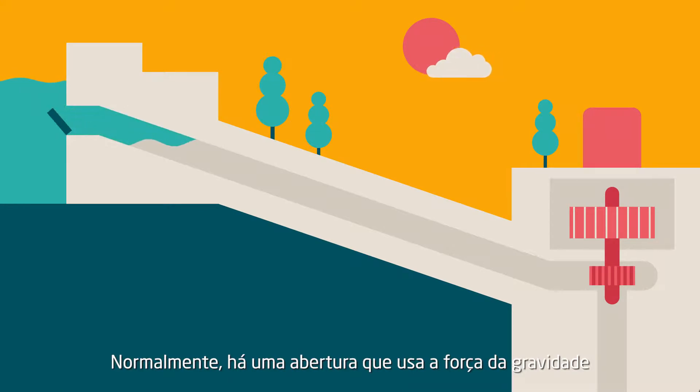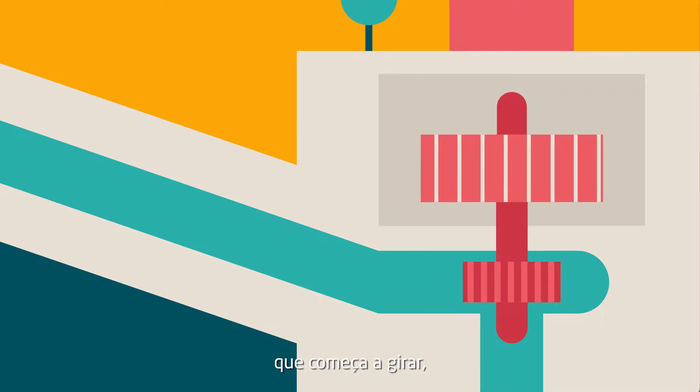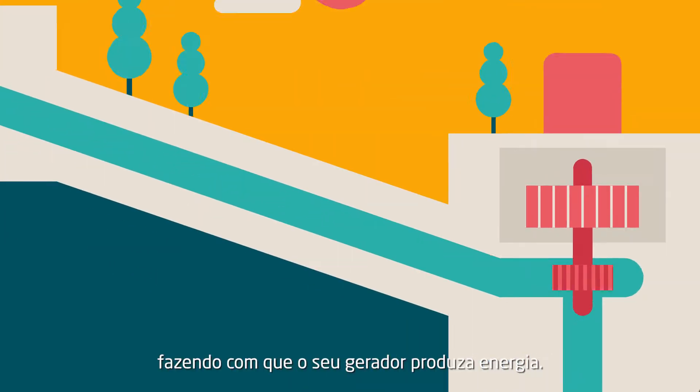Usually, there is an opening that uses gravity to make the water fall into a turbine, which starts spinning, making its generator work and produce electricity.